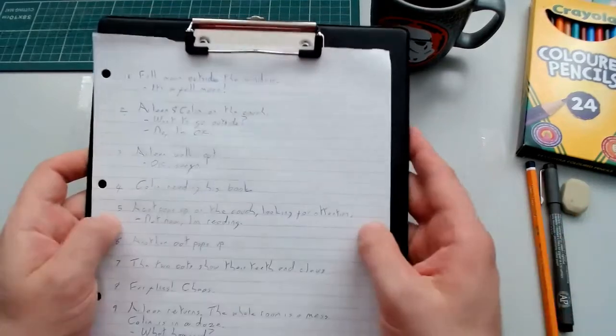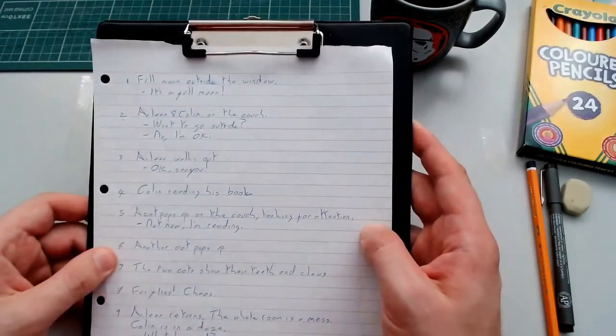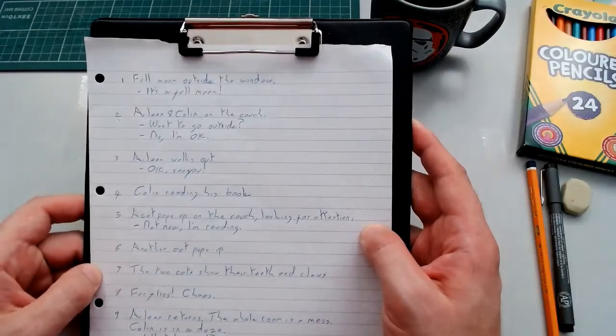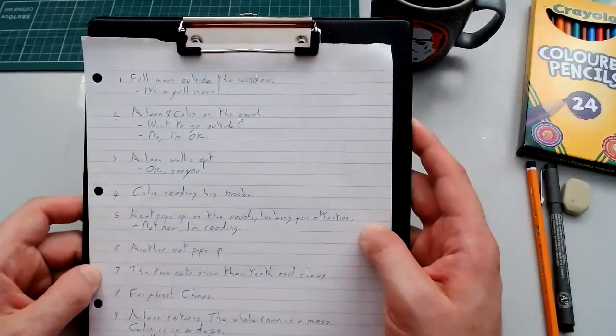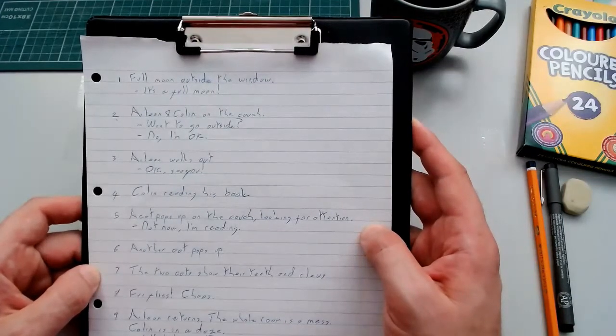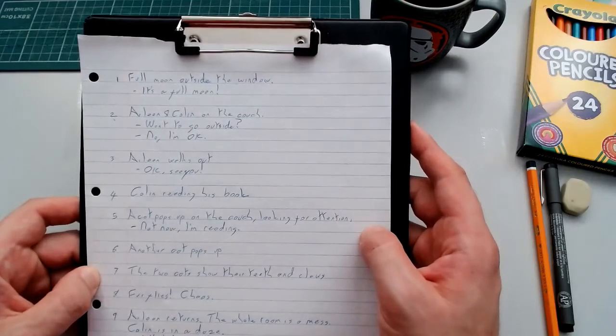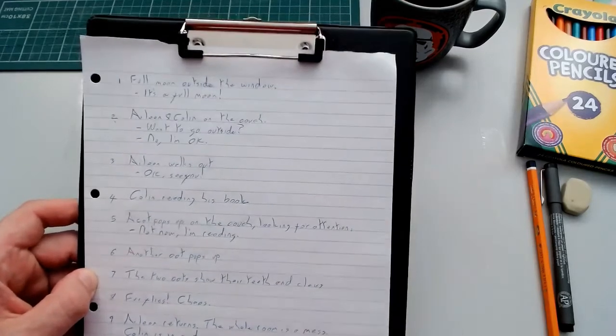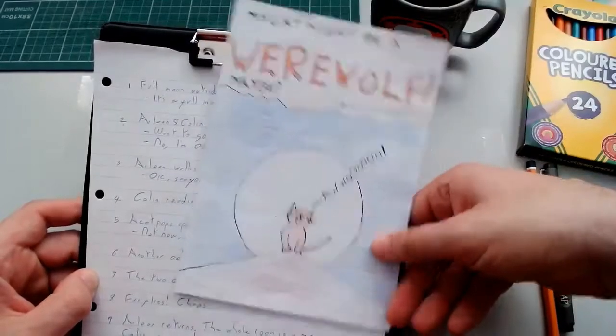So I come up with a story. The story for this comic was that we noticed at home that our cats would sometimes go a little crazy and just be running, jumping around the place, causing all kinds of trouble. And they would often do this, oddly enough, when the moon was full. So we decided, obviously, that our cats must be werewolves.